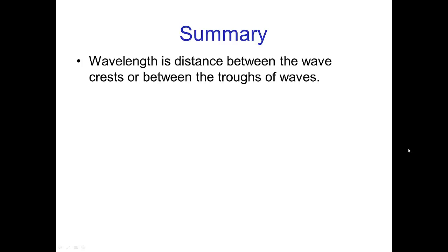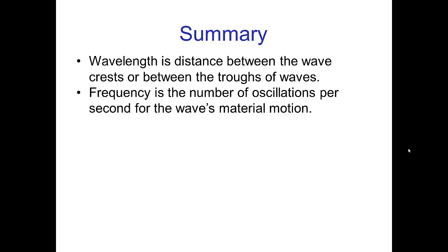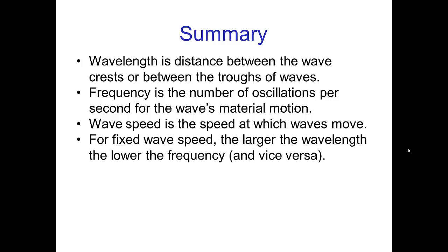In summary, wavelength is the distance between the wave crests or between the troughs of the waves. Basically, it's just the length of a wave. Frequency is the number of oscillations per second for the wave's material motion. Wave speed is the speed at which waves move. For fixed wave speed, the larger the wavelength, the lower the frequency. For example, the long pipes of the organ produce the low notes.